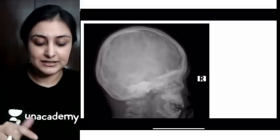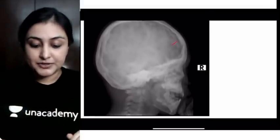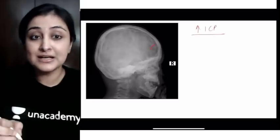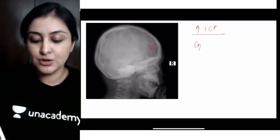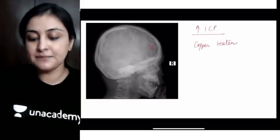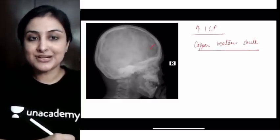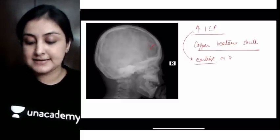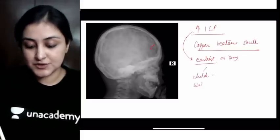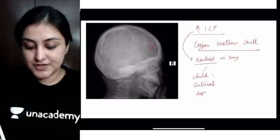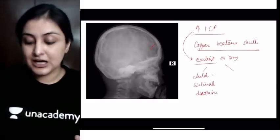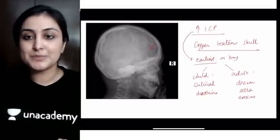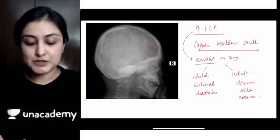In a child with raised intracranial pressure, you can see a calvarial appearance wherein the convolutions of the brain are imprinted on the skull. This is referred to as 'copper beaten' or 'silver beaten' skull appearance — a marker of raised ICP. If asked for the earliest marker of raised ICP on X-ray in a child, the answer is sutural diastasis — widening of the sutures. In an adult patient, the earliest marker would be erosion of the dorsum sellae.